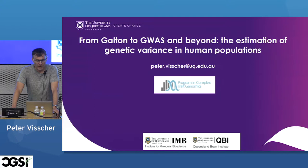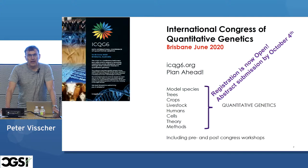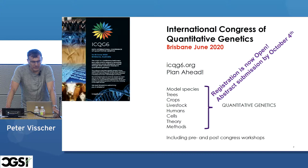My name is Peter Vischer. I'm a quantitative geneticist from the University of Queensland, and I got some very clear instructions from the organizers. I either have to give a research talk or a tutorial or both, and of course I'm going to do none of the above. So what I'm trying to do is give you a bit of a mix of a tutorial and a research talk. Before I do that, I'd like to invite all of you to come to Brisbane next year in June, where we're hosting the International Congress of Quantitative Genetics.